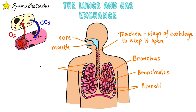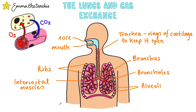Over here we've got the ribs. They make up the rib cage which protects the lungs, and between them are intercostal muscles. These help move the rib cage. Finally down here we've got the diaphragm. This muscular tissue also helps with breathing.